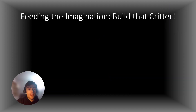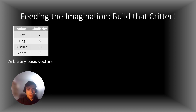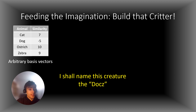Now I will feed your imagination by building a critter using vectors. This critter will have certain physical characteristics that can be completely described with a set of four different animals: specifically, the cat, dog, ostrich, and zebra. Each of which are associated with a number that describes the degree to which the creature is similar to that of the corresponding animal. I will call this creature the docks.